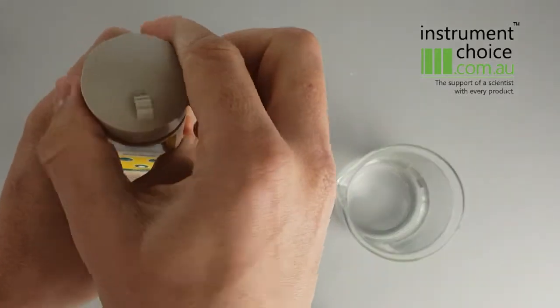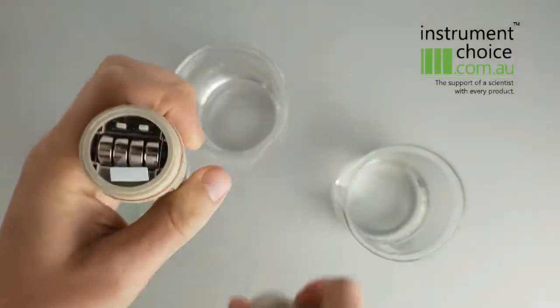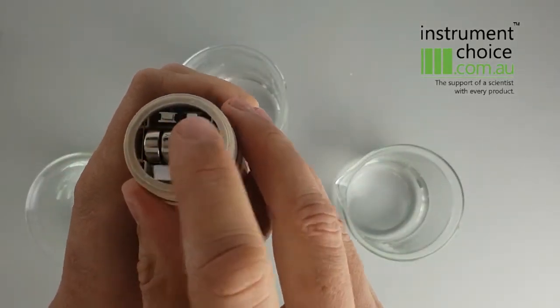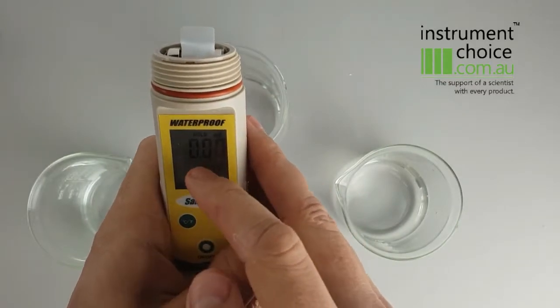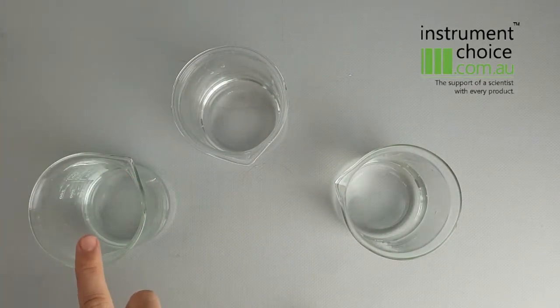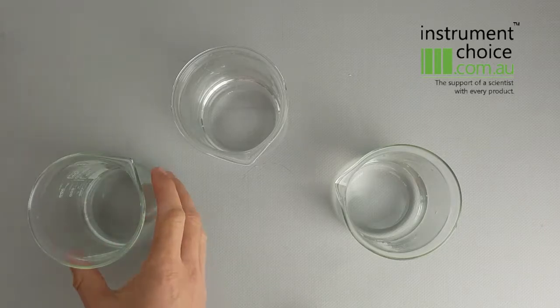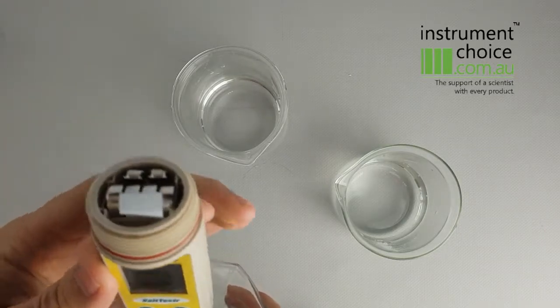You remove the top cap and underneath there's an increase and a decrease button, so either of these will adjust your value on the screen. I've got a 3,000 ppm or 3 ppt solution here, so what I want to do is adjust my meter to match that value.